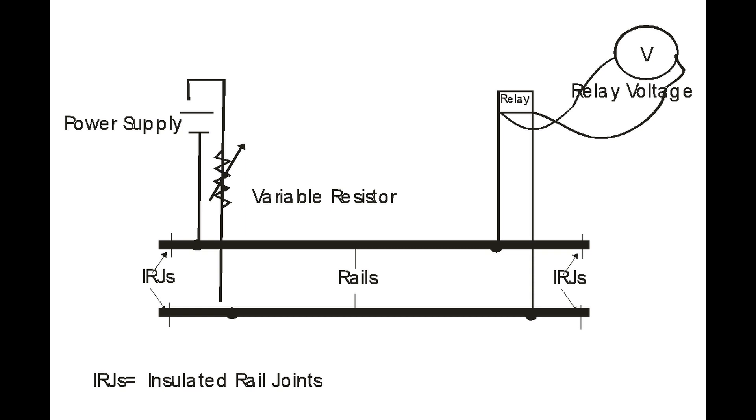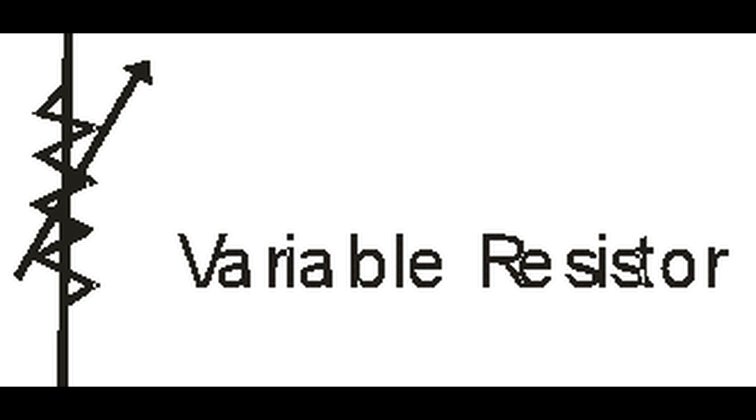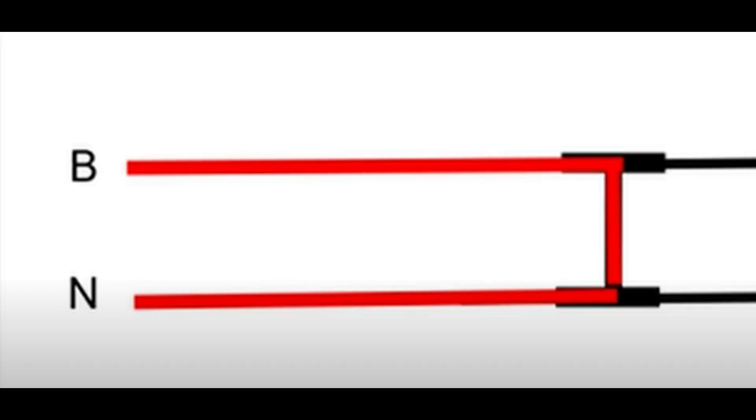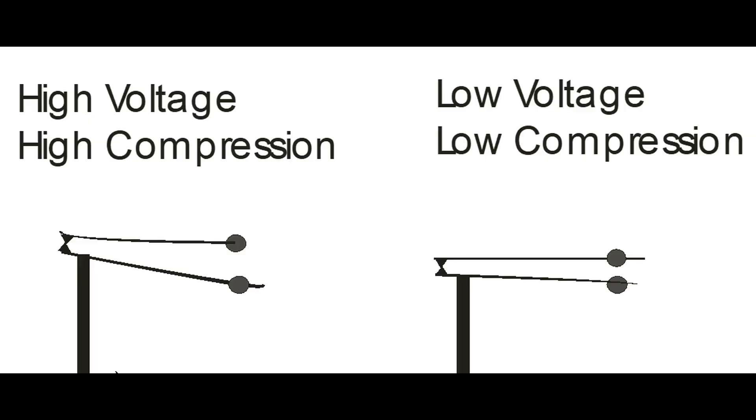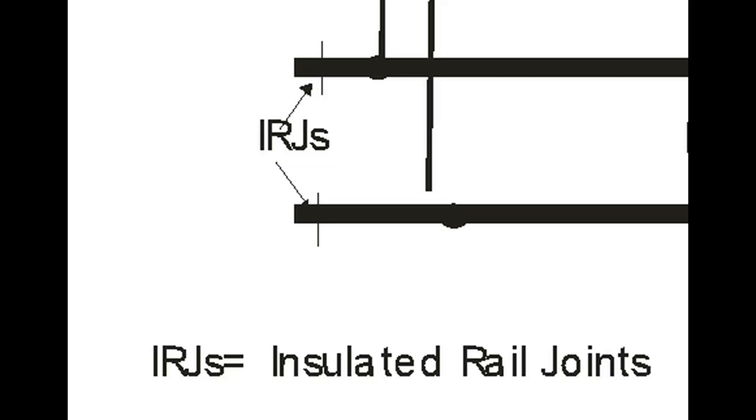The basic DC track circuit is used to explain the characteristics of track circuits, starting with the variable resistor used to vary current flow in the circuit, as well as acting as a load and preventing a short circuit across the power supply when the wheels and axles of a train short circuit rails. The amount of current flowing through the relay determines the relay voltage. The higher the current flow, the higher the relay voltage. The relay voltage determines the amount of pressure on the relay contacts. The higher the relay voltage, the higher the compression on the contacts. Insulated rail joints completes the basics.